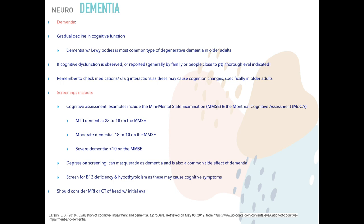When evaluating for possible dementia, perform a cognitive assessment. The Mini Mental State Examination is the most commonly used: mild dementia is a score of 23–18, moderate is 18–10, and severe is less than 10. A depression screening — PHQ-2 followed by PHQ-9 if warranted — should also be done, as depression can masquerade as dementia and is a common comorbidity. Screen for B12 deficiency and hypothyroidism as well. Consider MRI or CT to establish a baseline.